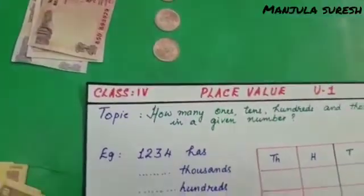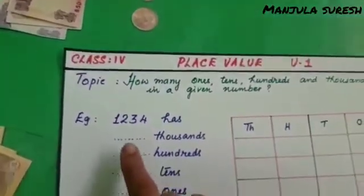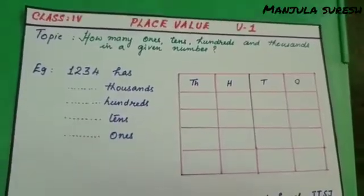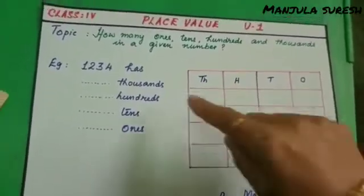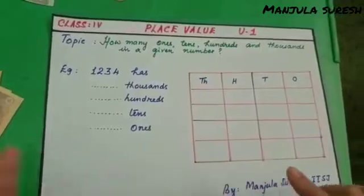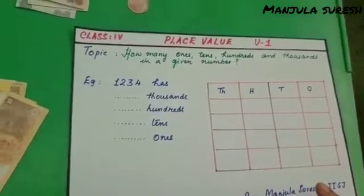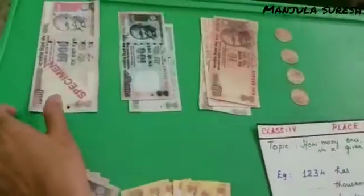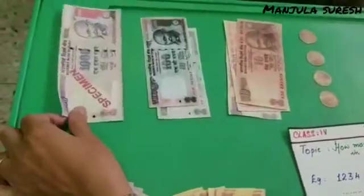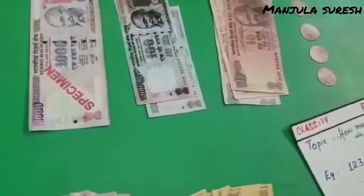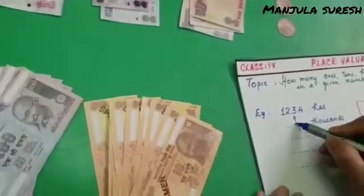For example, here is a number 1234. We have to find out it has how many thousands, hundreds, tens and ones. Now see this number 1234 — in this how many thousands it has? Only 1. So we can write it as 1000 over here.